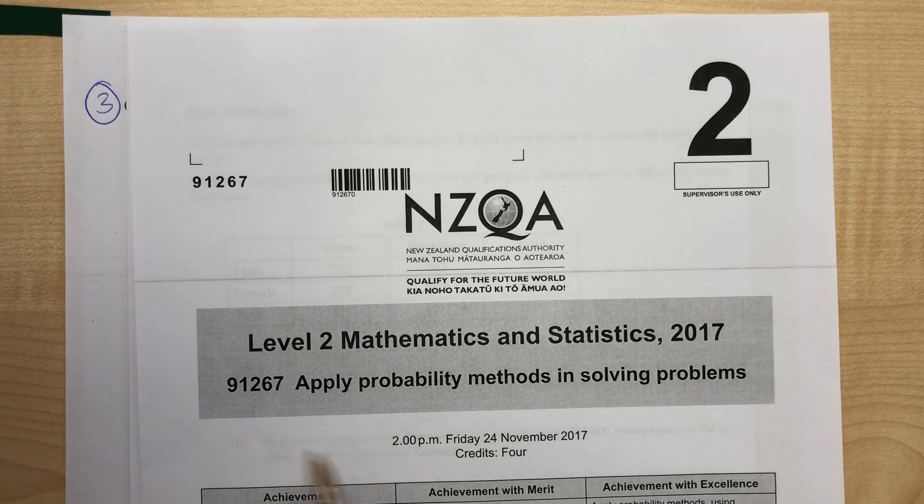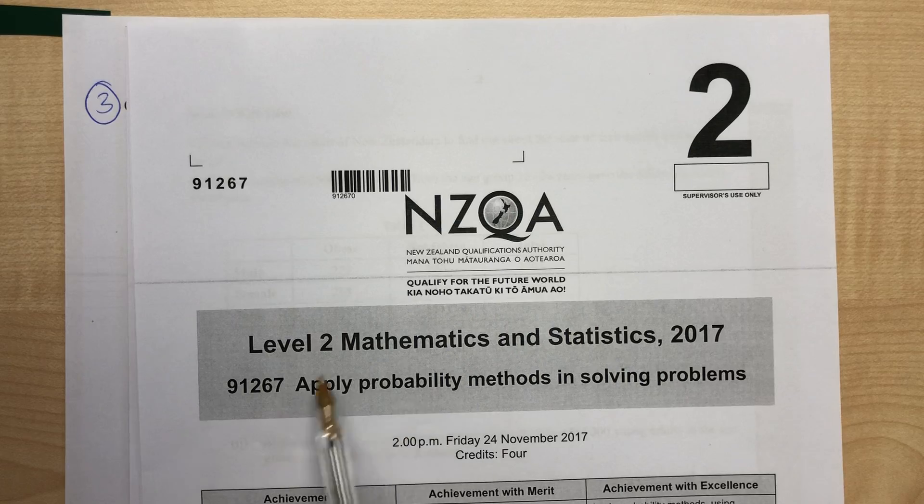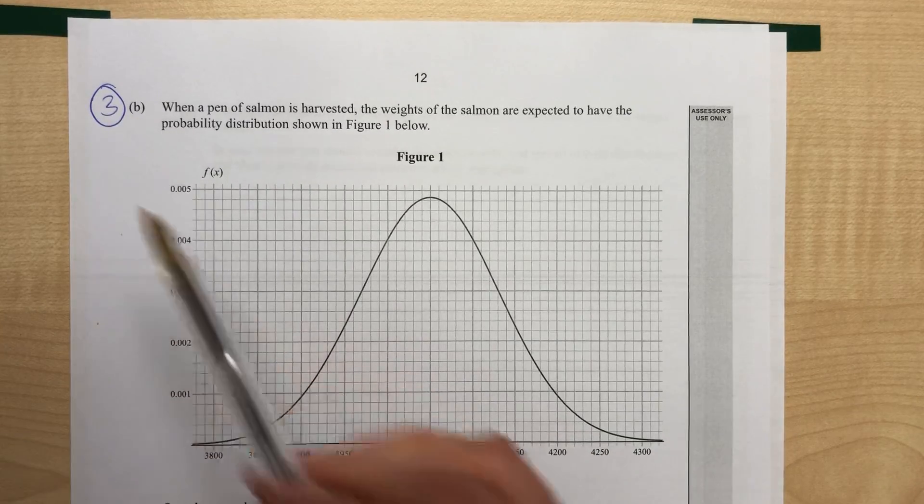So this video is going to carry on with the paper 91267 from 2017. It's the Level 2 Probability External. And we're up to question 3, part b.